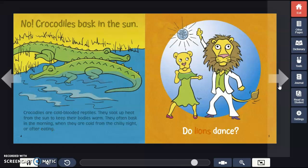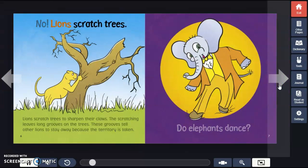Do lions dance? No! Lions scratch trees. Lions scratch trees to sharpen their claws. The scratching leaves long grooves on the trees. These grooves tell other lions to stay away because the territory is taken.